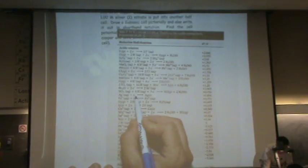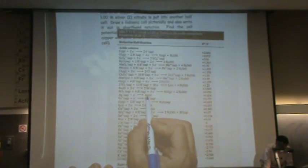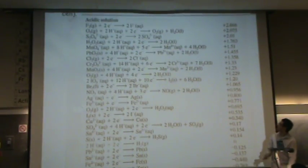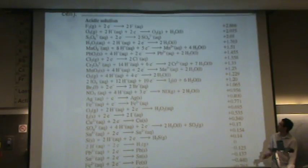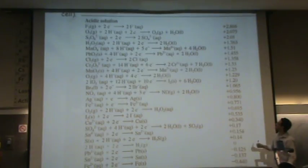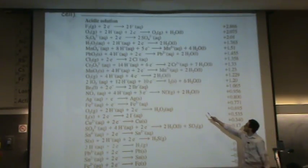It's copper two plus plus two electrons goes to copper solid, and silver plus plus one electron goes to silver solid. So if you don't have this, make sure to pick this up from whatever textbook.